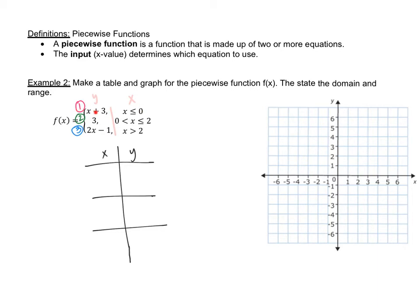The first equation says x is less than or equal to zero. So I know x can be zero, and if I choose an x smaller than zero I'll just pick negative one. Now I'm going to use a symbol to represent these numbers when I translate them to the graph. Notice how this zero has an equal sign underneath, so I'm going to use a solid dot. Anytime you have those types of inequalities we use a solid dot. Anytime you have an open inequality without the equal sign, you use an open circle.